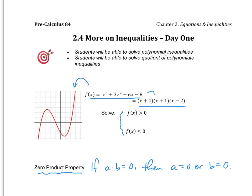In our case, we're going to set them all equal to 0, and we're going to say that x equals negative 4, which is over here on our graph; x is equal to negative 1, which is also on our graph; and x is equal to positive 2, which is right here on our graph.